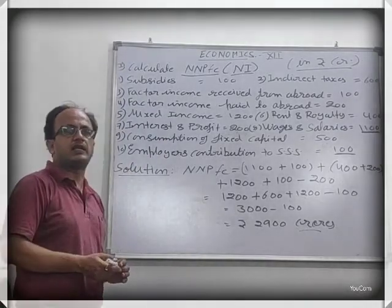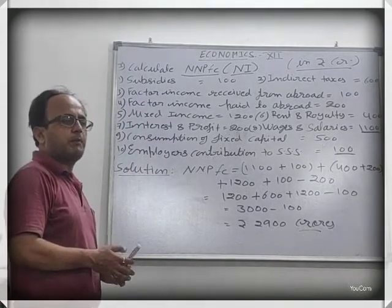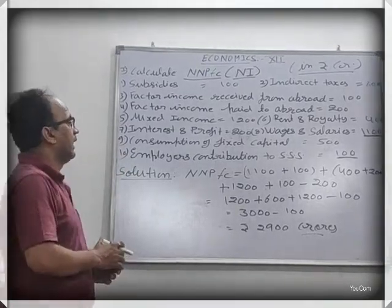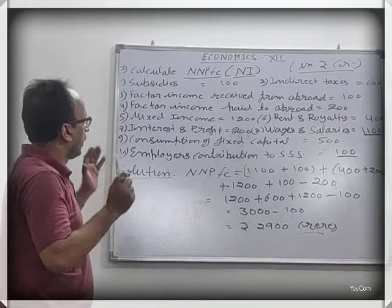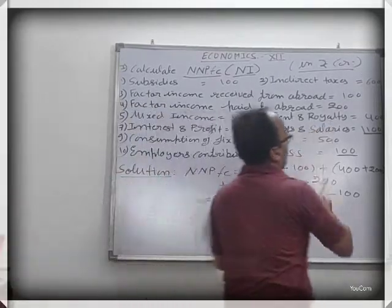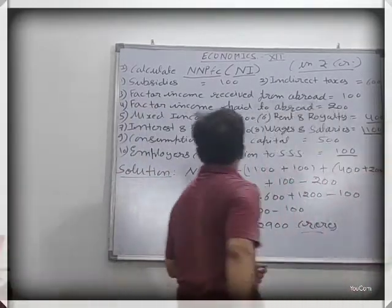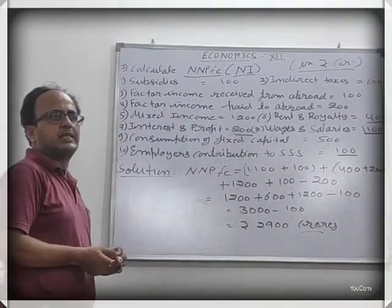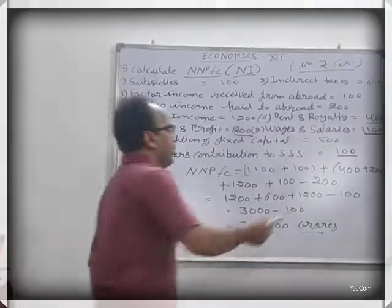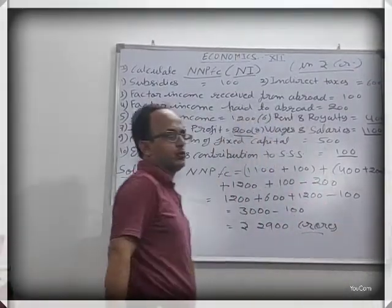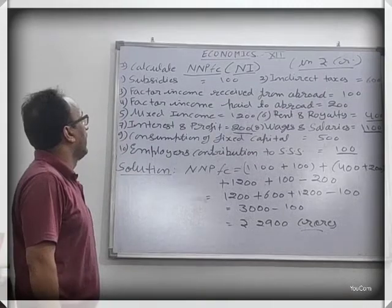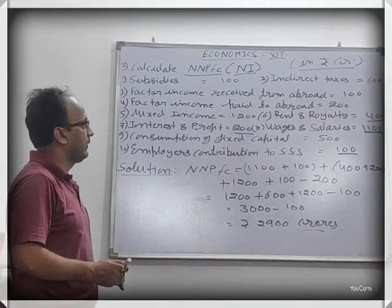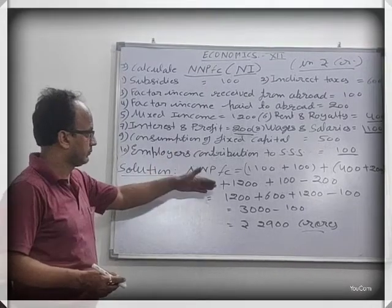Secondly, we have to find Operating Surplus. Operating Surplus is the sum of rent, royalty, interest, and profit. In the given portion, rent and royalty is 400, and interest and profit is 200. So their sum, 400 plus 200, is the Operating Surplus. Then we have to add Mixed Income. In the given portion, Mixed Income is also given and it is 1200.